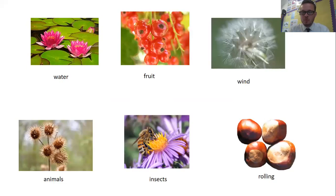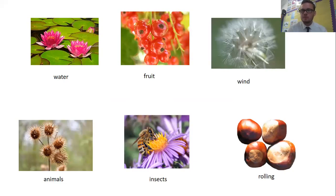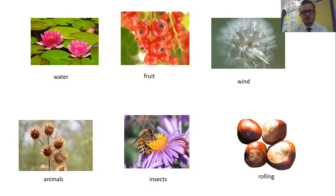So we've got water as one way — can you remember the flower we talked about that disperses by water? Yes, the water lily. Fruit: the seeds are dispersed when animals eat fruit and the seeds come out in the excrement of the animals. Wind: dandelions, for example, are able to spread by wind. Animals: those burr pods that get stuck to you when you're out walking sometimes. And rolling — conkers and acorns and things like that that can drop, have the impact, and then carry on. Well done if you could remember all of those.